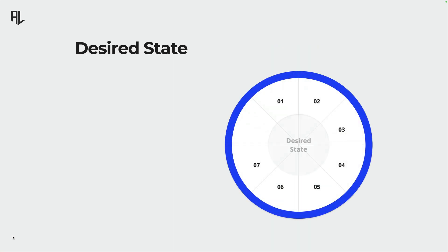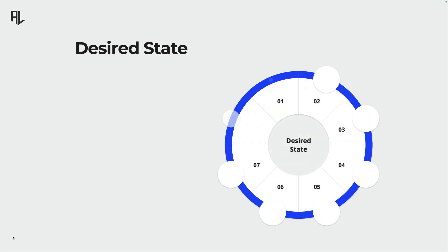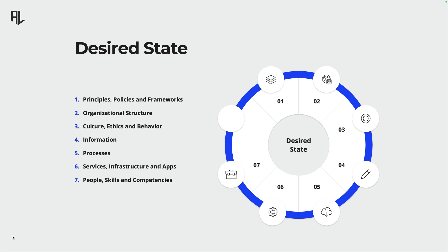When it comes to the desired state, we have to consider multiple components that should be targeted by an information security strategy. First, we have principles, policies, and frameworks.